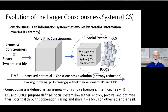Consciousness is defined as awareness with a choice — and when I say choice, the choice isn't random, it has purpose. It isn't for no reason — it has an intention. And just to have a choice at all requires free will. So purpose, intention, and free will is what we mean by awareness with a choice. Now the larger consciousness system and individual units of consciousness — their purpose is defined: social systems lower their entropy, evolve, and optimize their potential through cooperation, caring, and sharing — a focus on other rather than self.